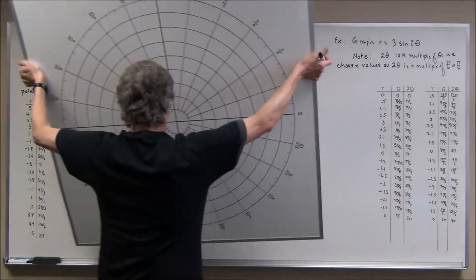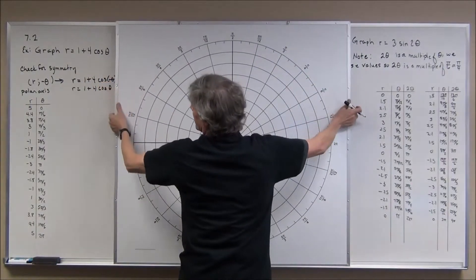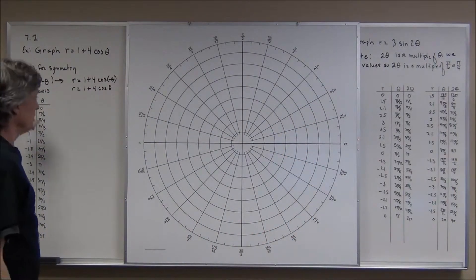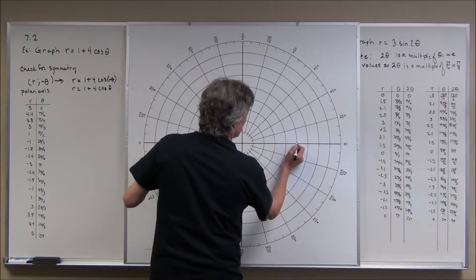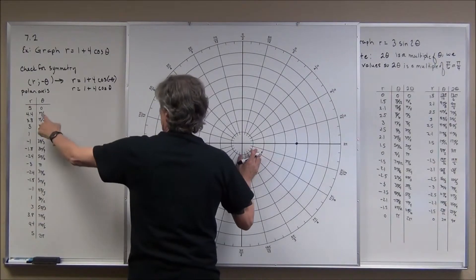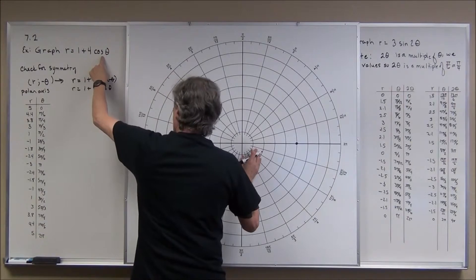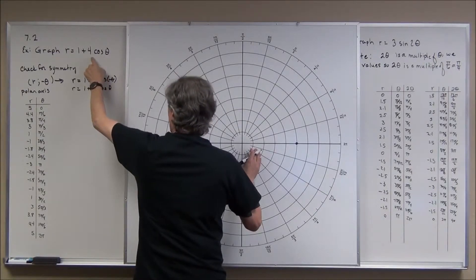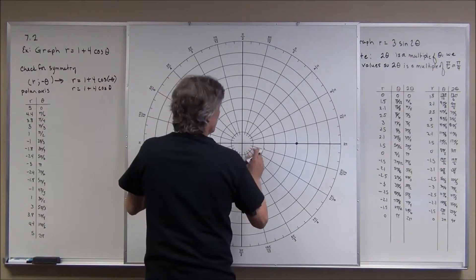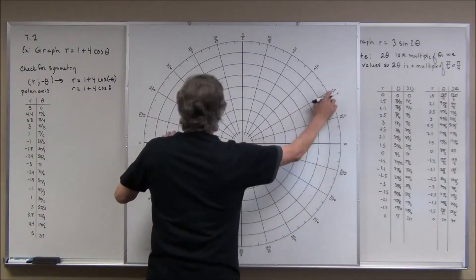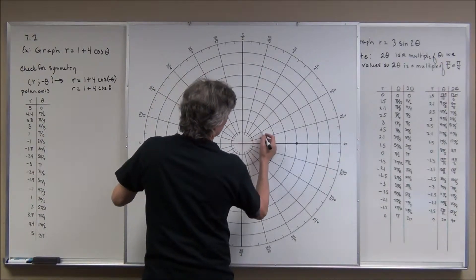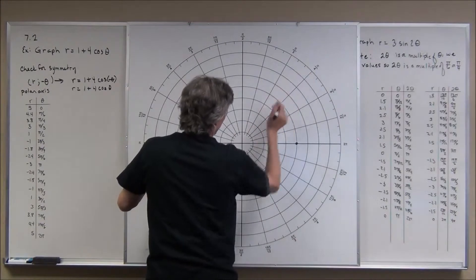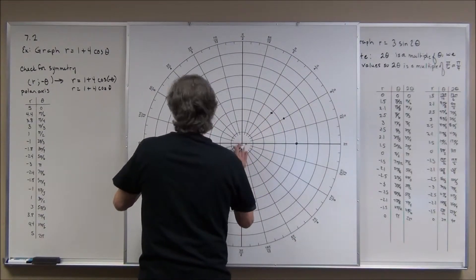I get my big piece of graph paper. I start graphing these points: (5, 0) right here. Then (4.4, π/6) — cosine(π/6) is √3/2 ≈ 0.866, times 4 plus 1, rounded to 4.4. So at angle π/6 with positive r, I go 1, 2, 3, 4, 4.4 in that direction. Then (3.8, π/4): at π/4, go 1, 2, 3.8.